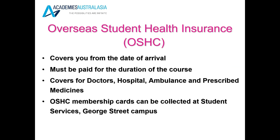As a student you will also have access to Overseas Student Health Insurance. It covers you from the date of your arrival and it covers you for doctors, hospital, ambulance and prescribed medicine. If you're with Bupa you can collect this from the school. If you have insurance with any other company, you can speak with your agent and your agent will be able to provide your health care card to you once you have arrived in Australia.